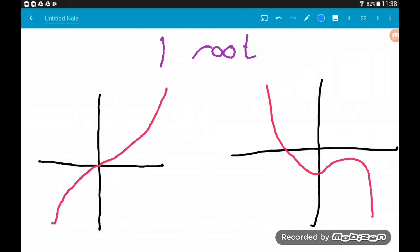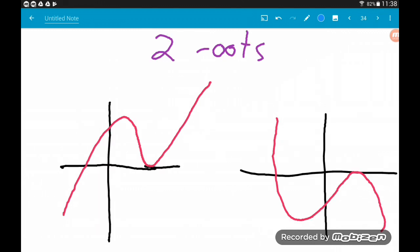Cubics always do this. The guy on the right is starting in the top left quadrant and he's going off down in the bottom right quadrant. So these guys only hit the x-axis at one point, so they only have one real root.